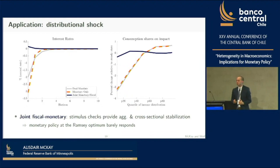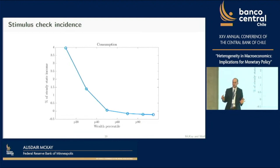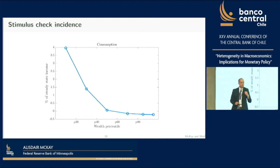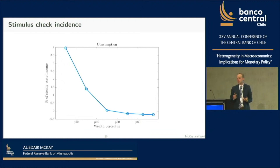There was a question about using a different tool. Now I use the fiscal stimulus payment—send everybody the same check, and the planner chooses how big. The black line combines monetary policy and fiscal stimulus checks. On the right, those checks do a very good job smoothing out the inequality issue. On the left, when sending checks, you actually don't need to cut interest rates—you slightly increase them, because you've neutralized the aggregate demand shock by replacing the lost income of low-income people.